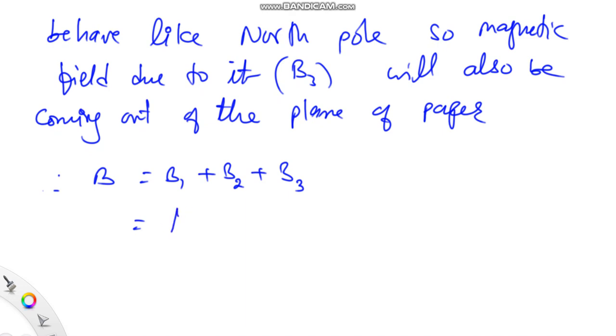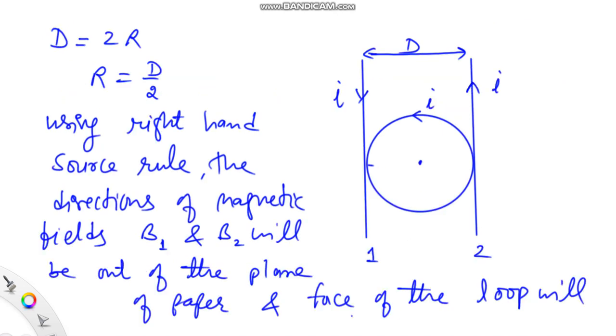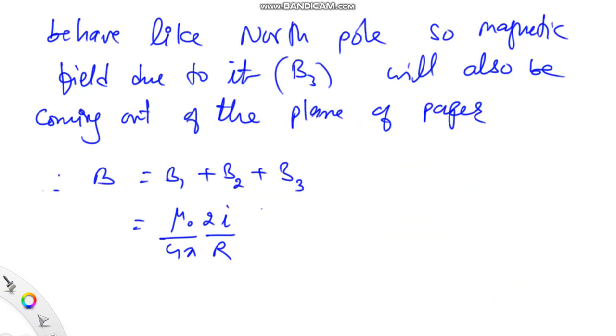Distance r here is equal to the radius of the loop. Similarly for B2, the magnitude will remain the same: μ₀/4π times 2i/r. For the magnetic field at the center of the current loop, that is given as μ₀ times i by 2r.